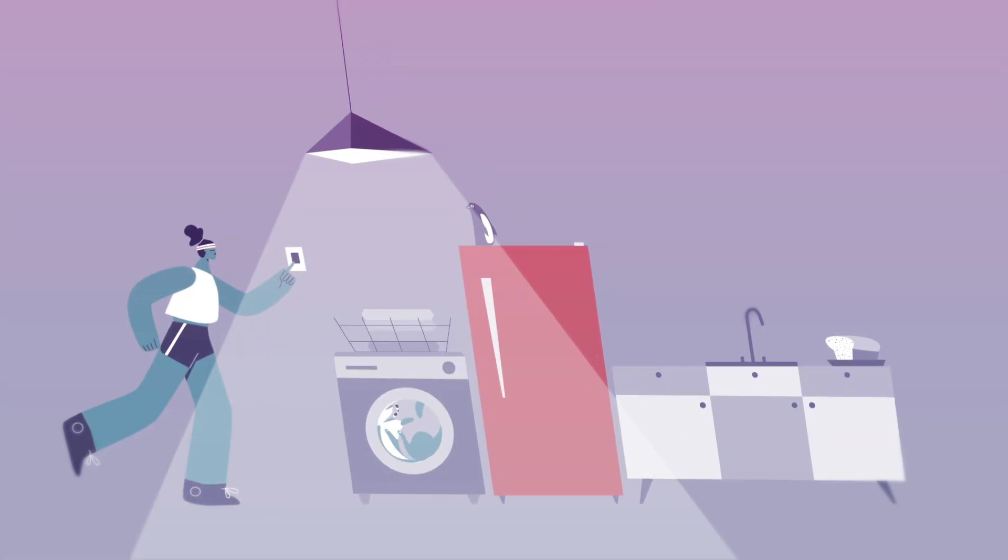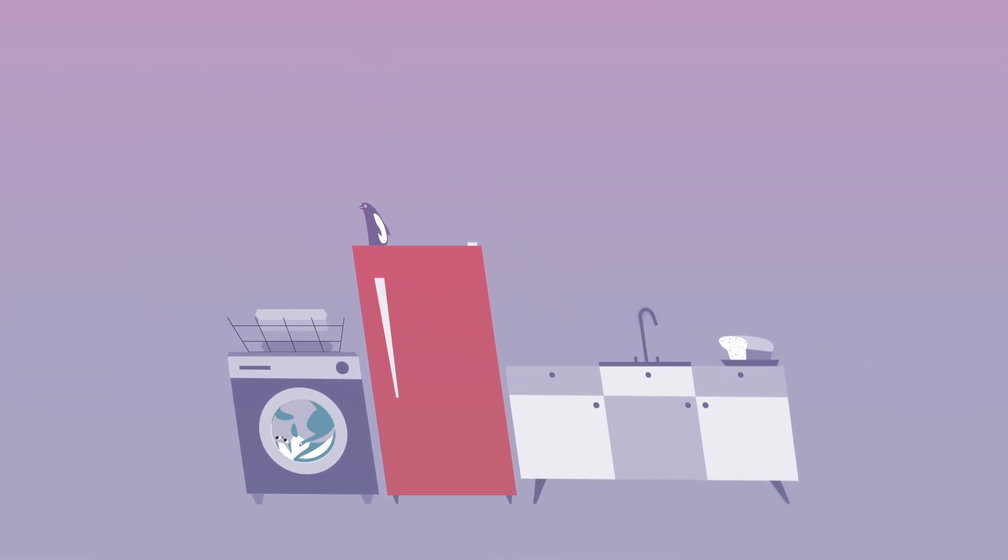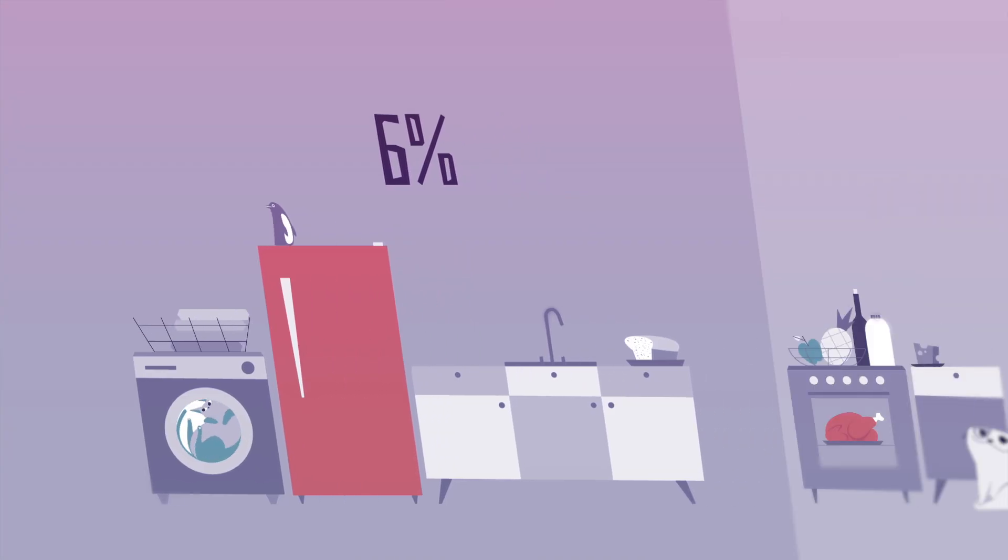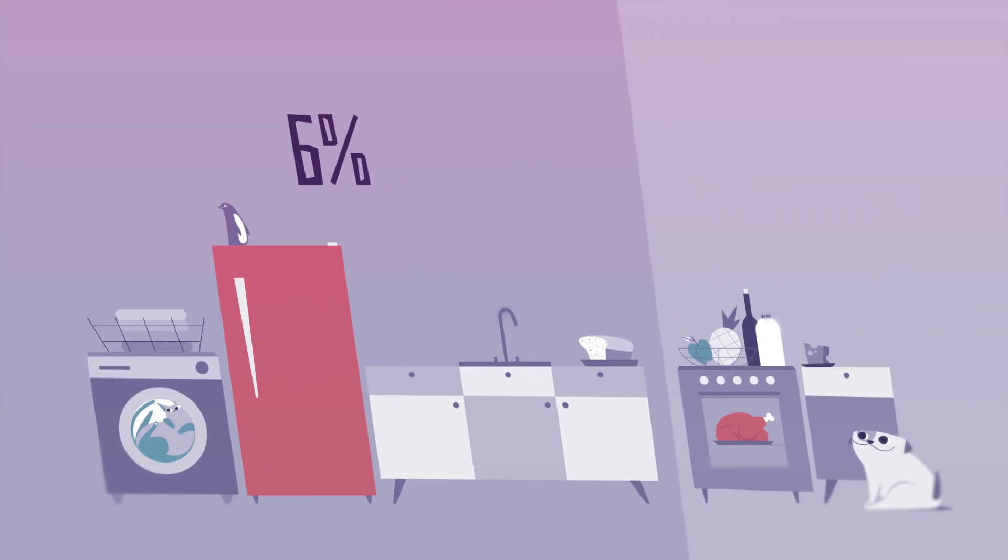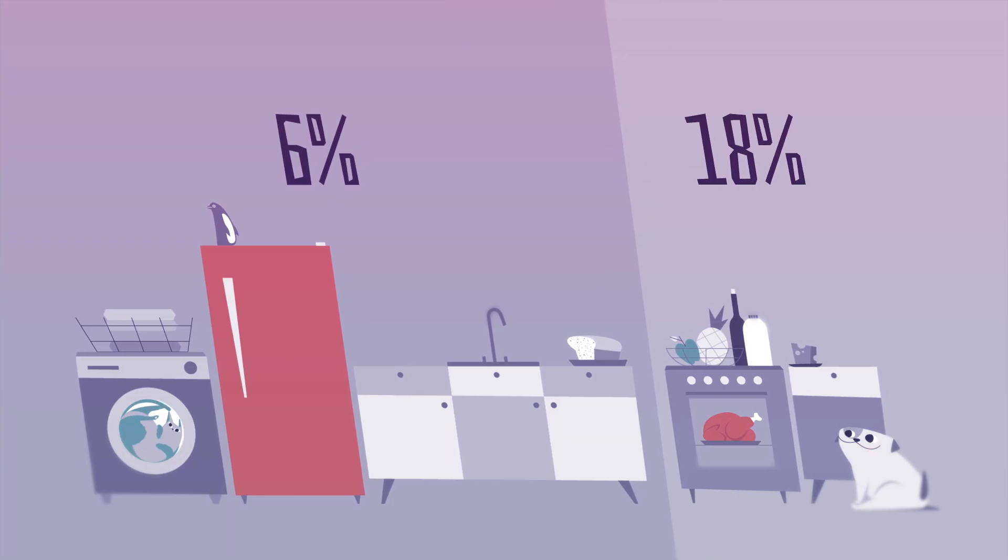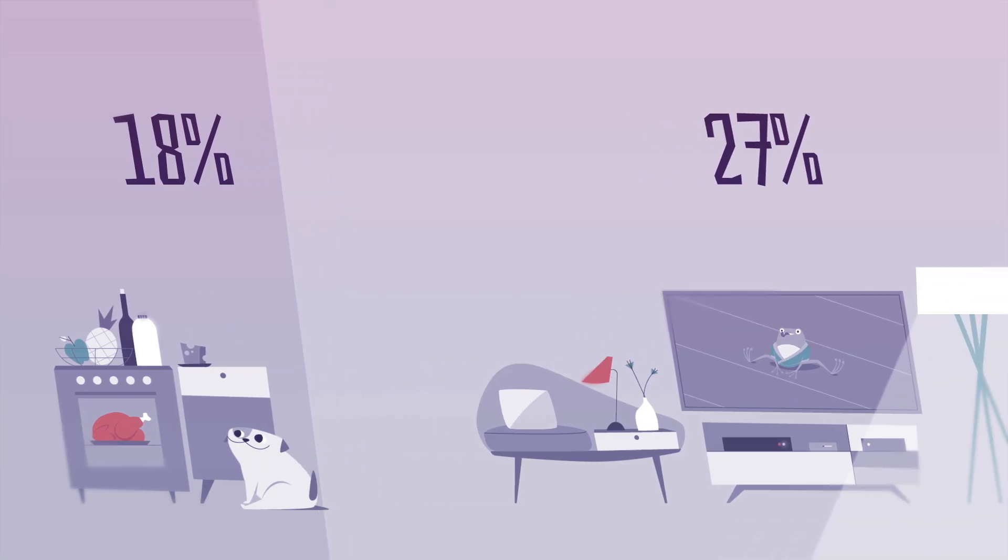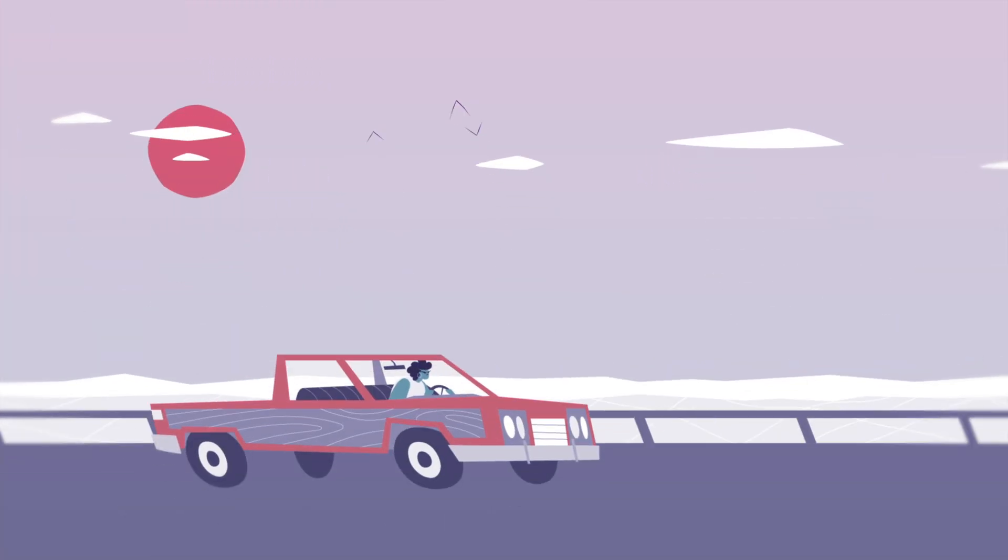Look around your home. Refrigeration, along with other heating and cooling, makes up about 6% of total emissions. Agriculture, which produces our food, accounts for 18%. Electricity is responsible for 27%.